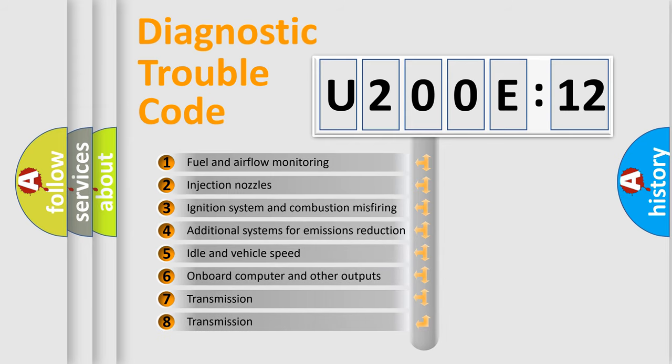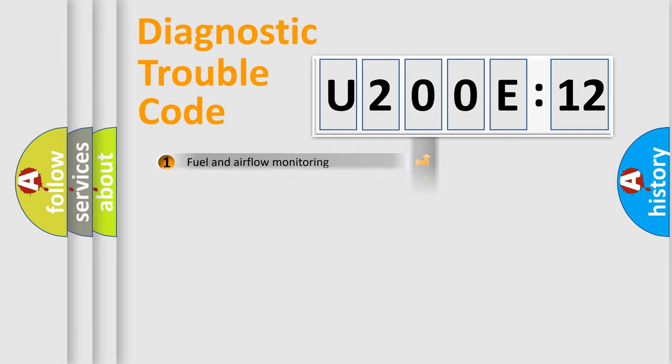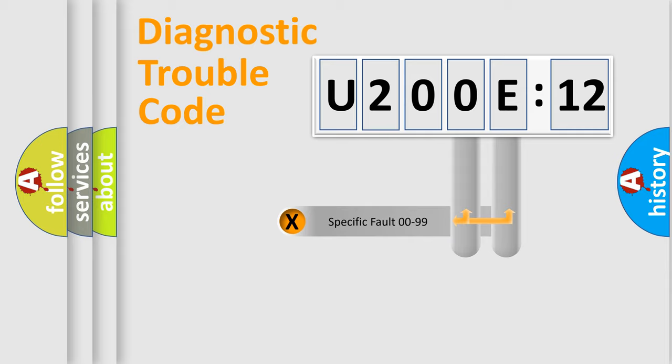The third character specifies a subset of errors. The distribution shown is valid only for the standardized DTC code. Only the last two characters define the specific fault of the group.